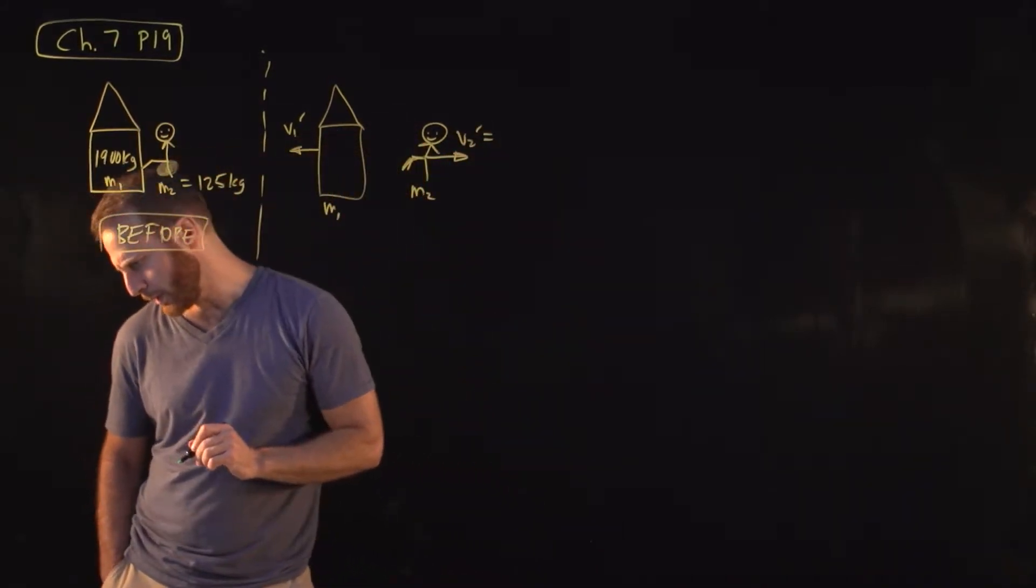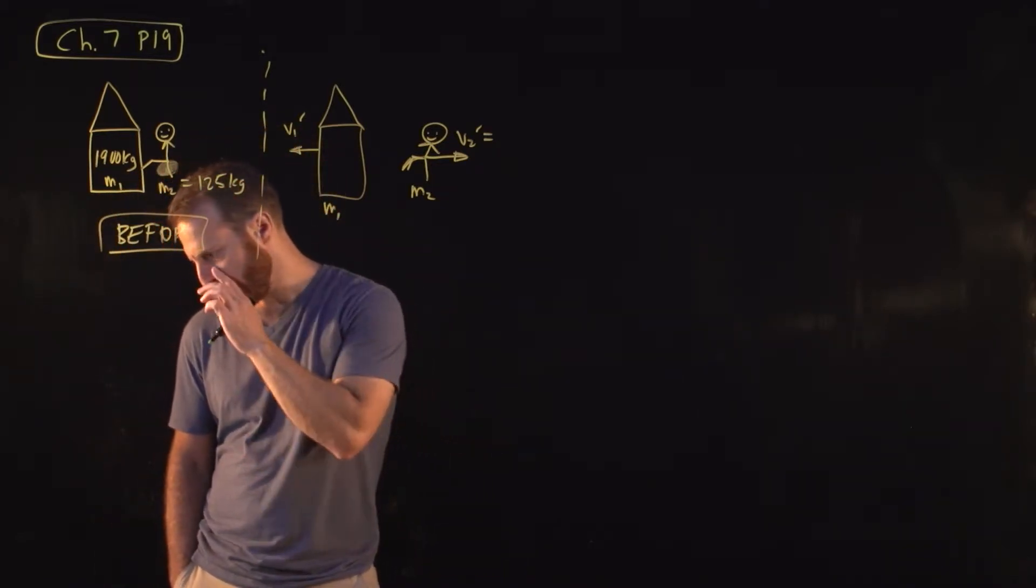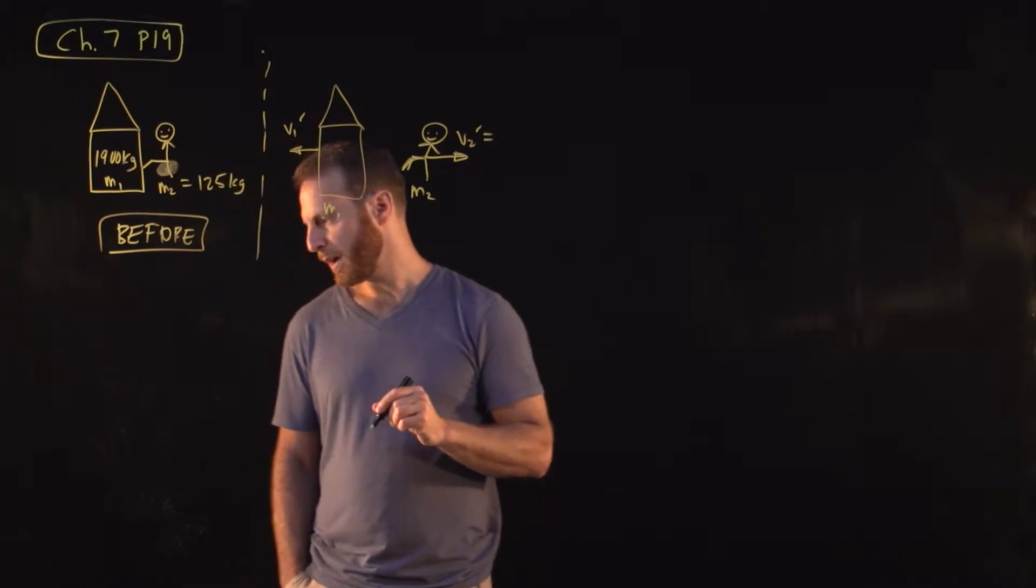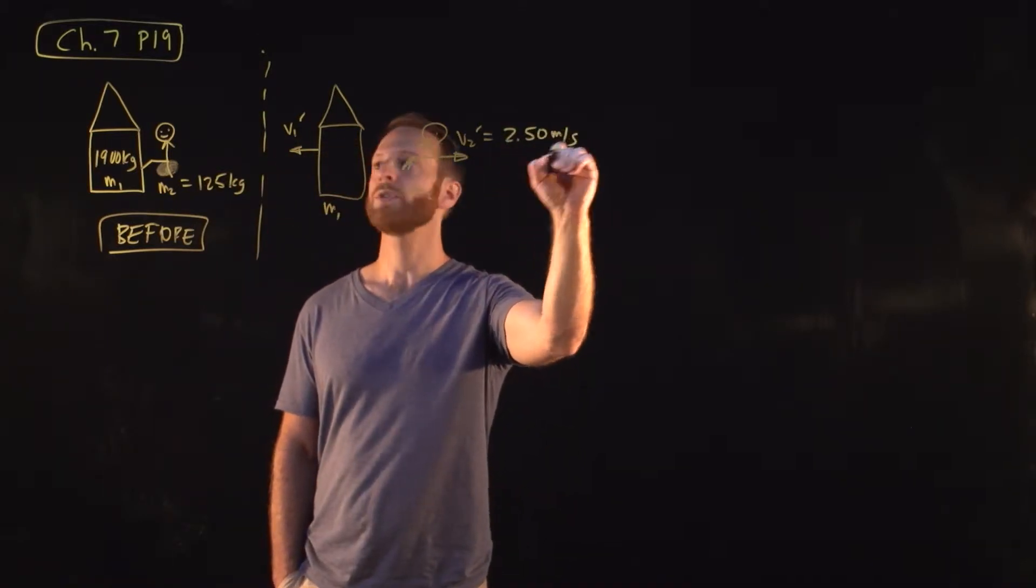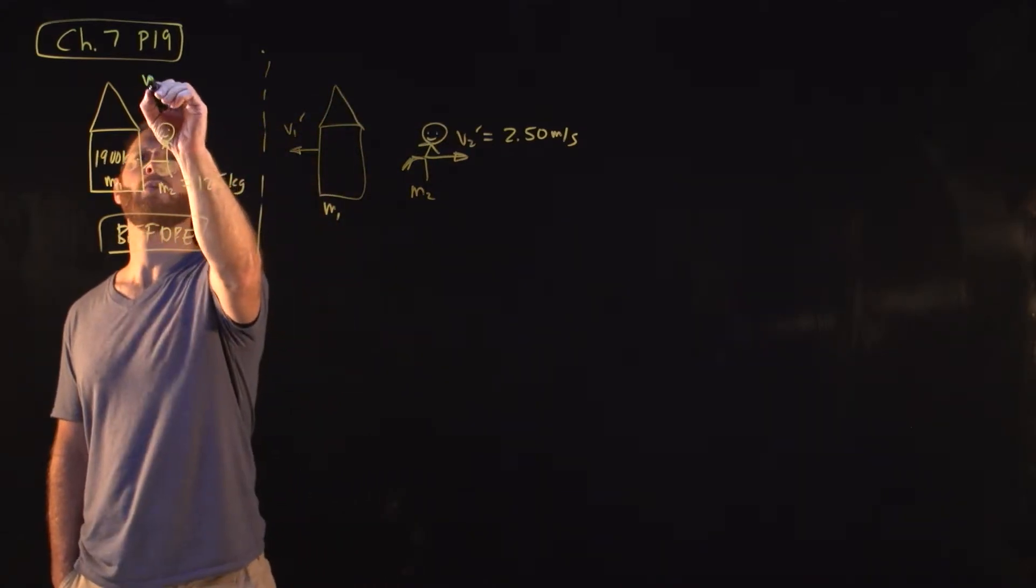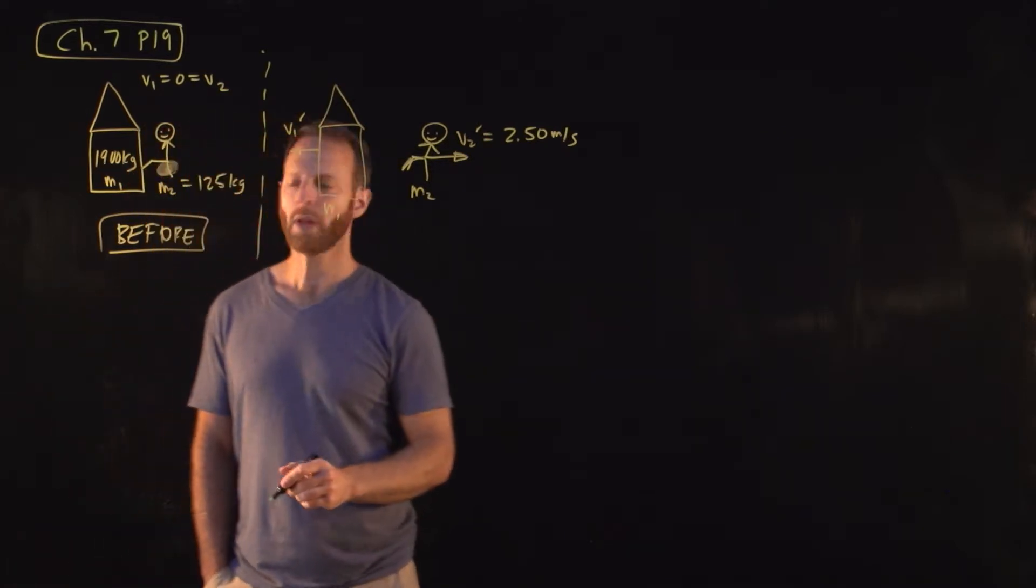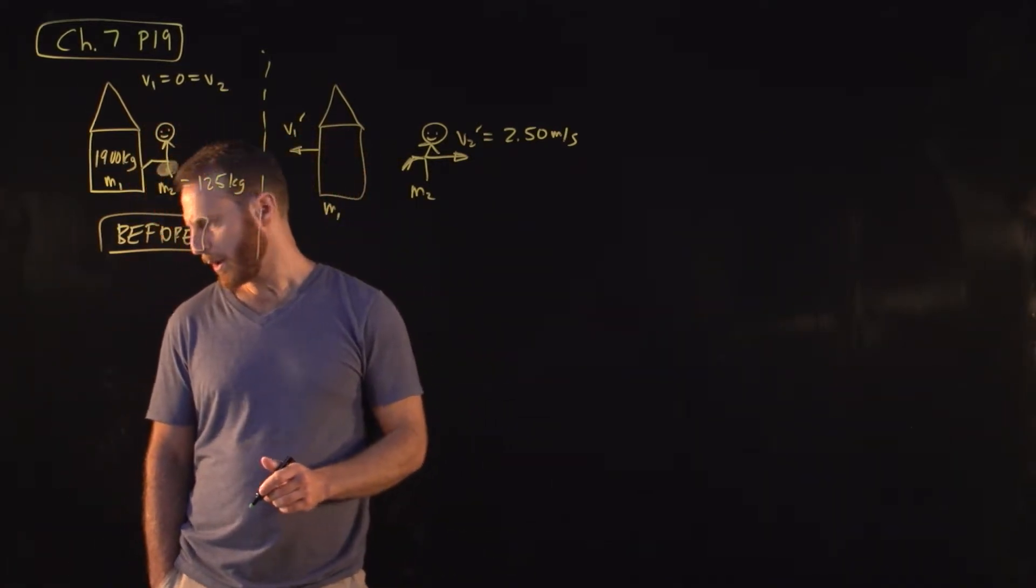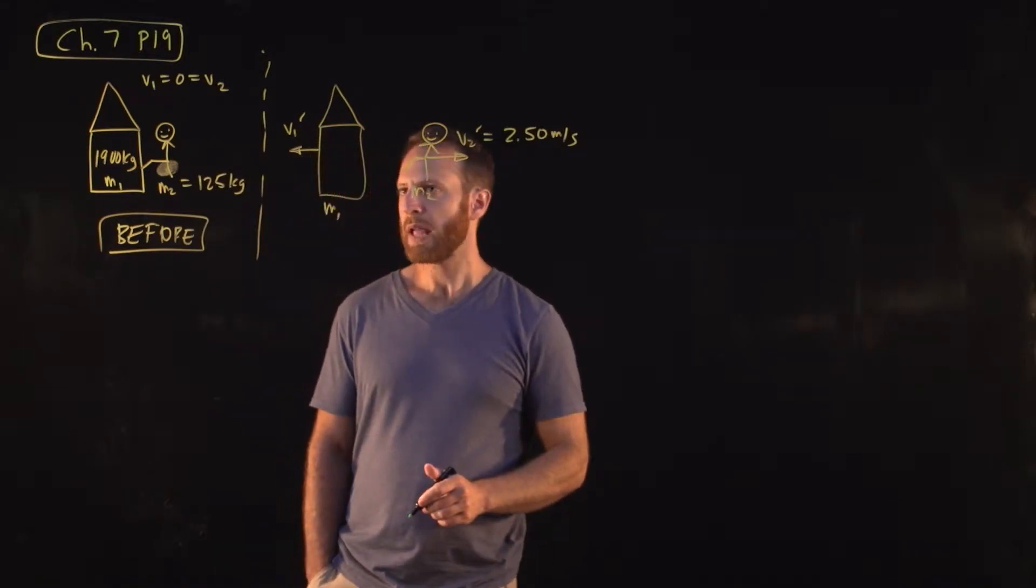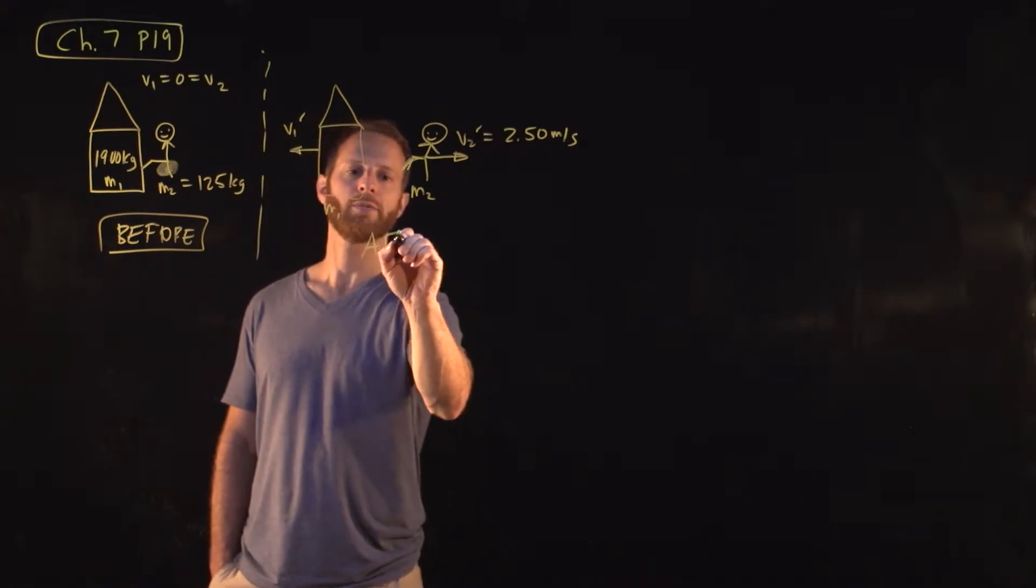Let's go ahead and indicate what we have here. We have the masses, we have that she acquired a speed of 2.5 meters per second. We might want to note over here that both V1 and V2 are both originally zero. So in part A, what is the change in speed of the space capsule? In other words, what is the speed of the space capsule afterwards?